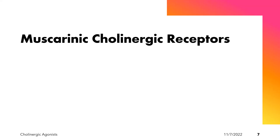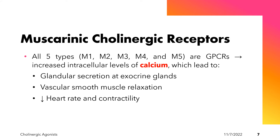All five types of muscarinic receptors are GPCRs, or G-protein-coupled receptors, because they utilize G-protein to communicate within the cell and produce their effects. In terms of mechanism, they increase intracellular levels of calcium, leading to the following effects: glandular secretion at the exocrine glands, relaxation of vascular smooth muscles in blood vessels, and a decrease in heart rate and contractility.